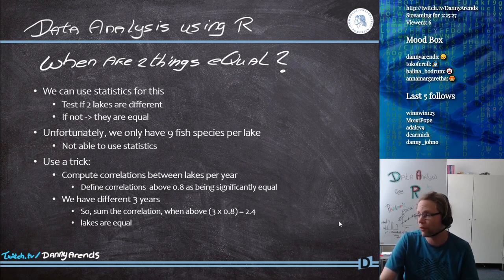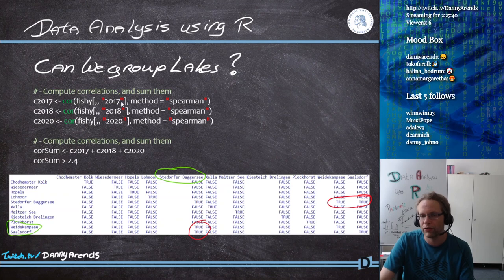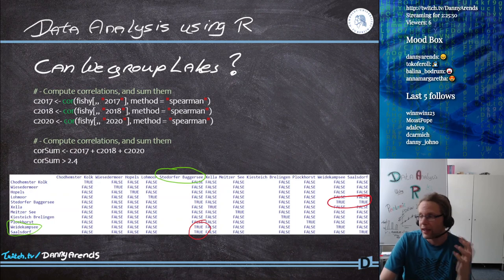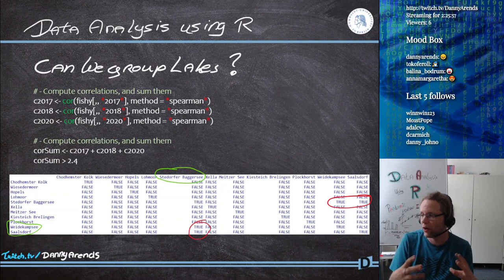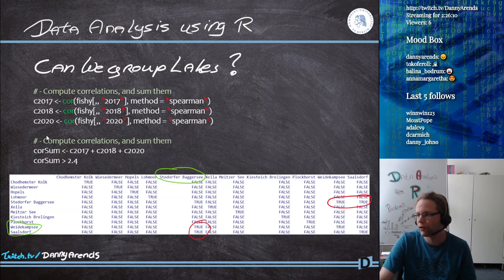Using the 3D matrix, it becomes really easy to compute correlations. We use the Spearman method to make sure single outliers don't influence our results too much. We also note that with only nine or ten species, correlation estimates come with a relatively large margin. I compute correlations for three different years and sum them up, asking which pairs are above 2.4.